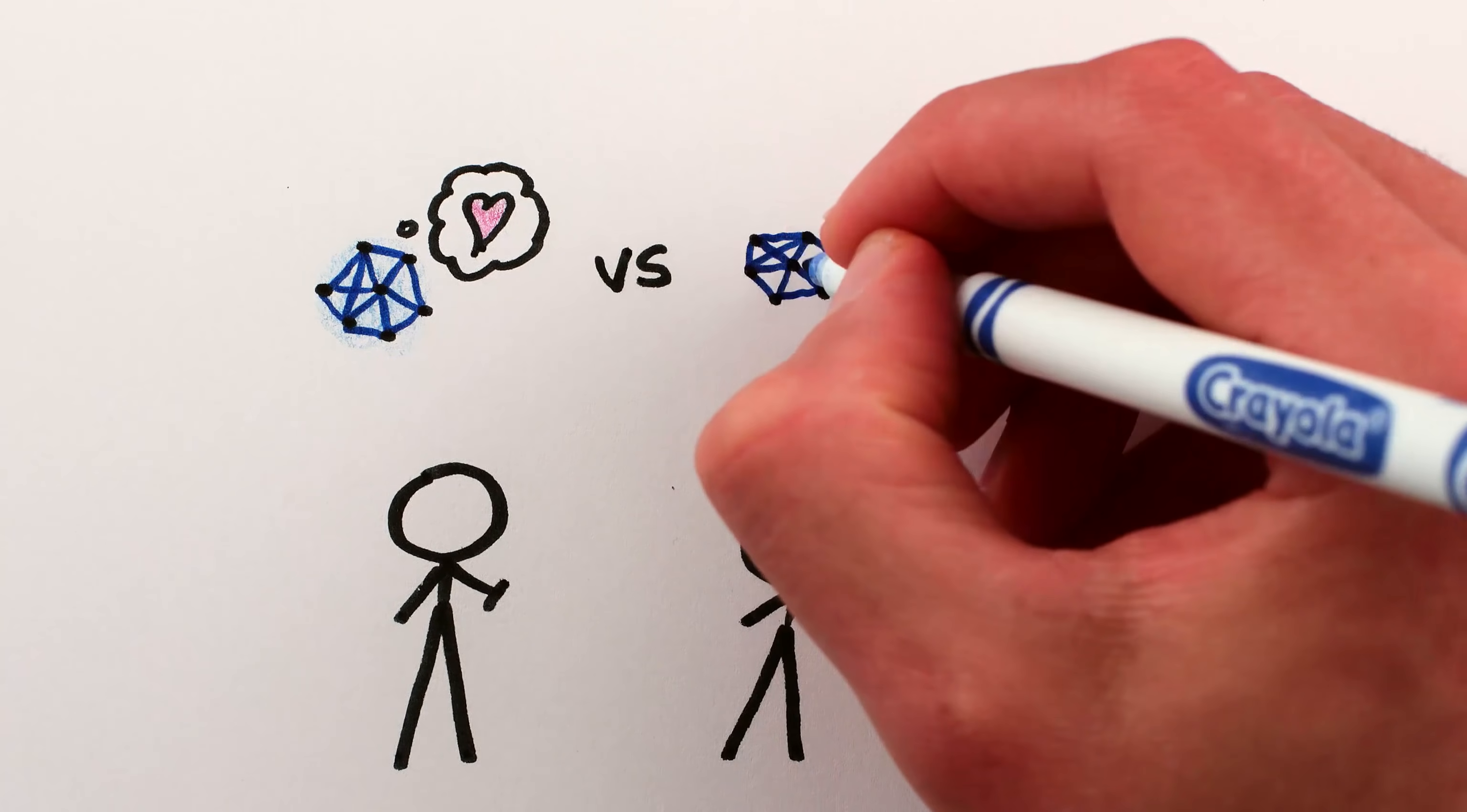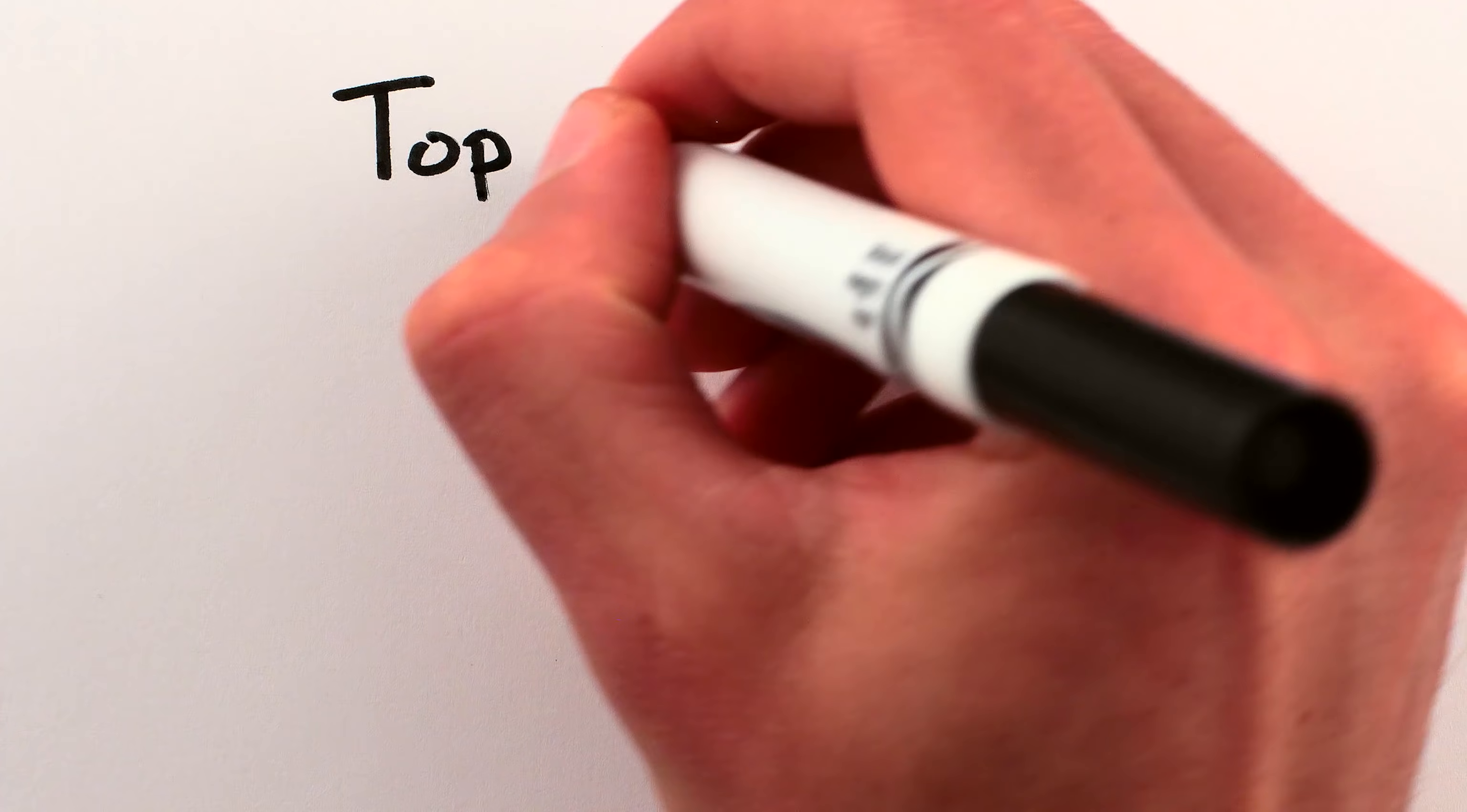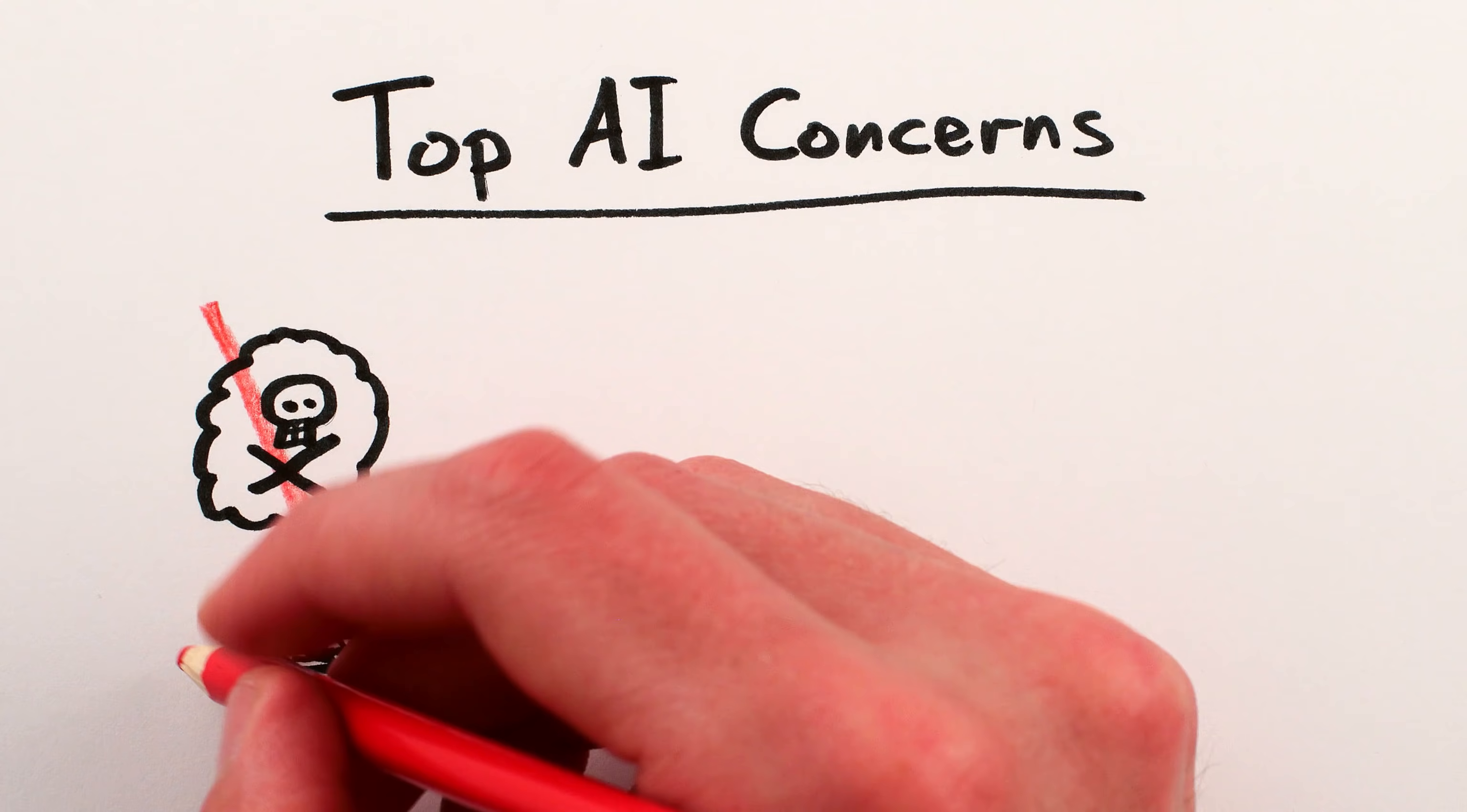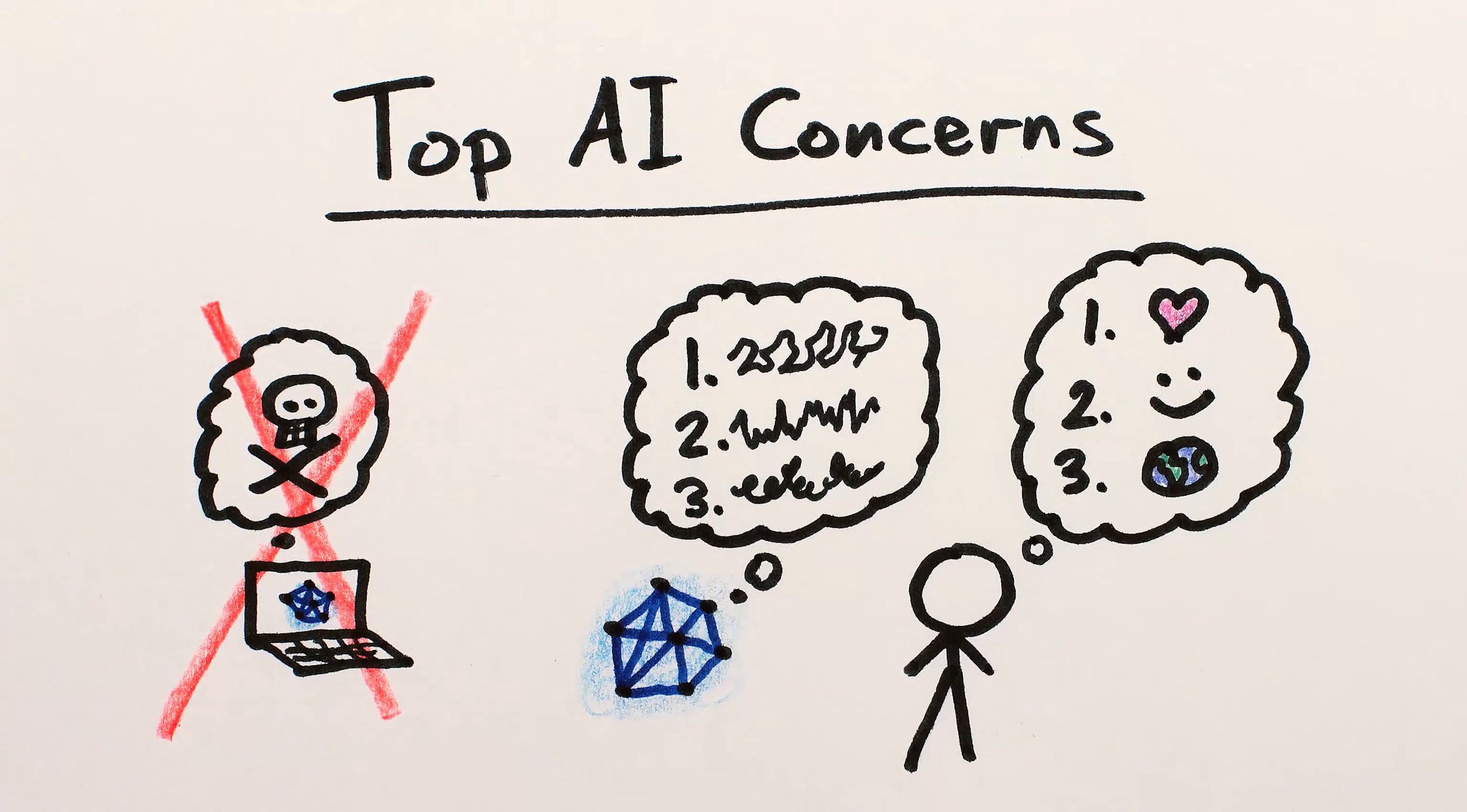So, how do we keep ourselves on the right side of the flourish or flounder balance? What, if anything, should we really be concerned about with super-intelligent AI? Here's what has many top AI researchers concerned. Not machines or computers turning evil, but something more subtle. Super-intelligence that simply doesn't share our goals.